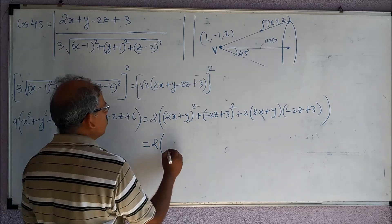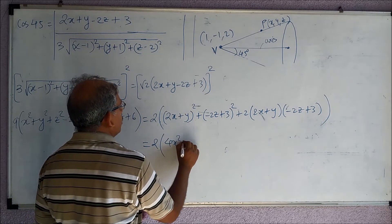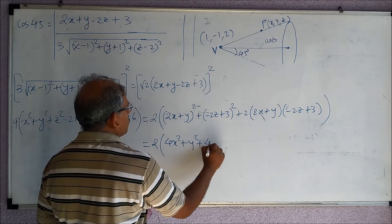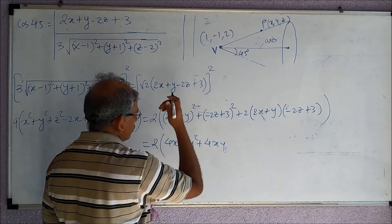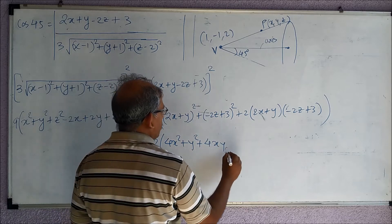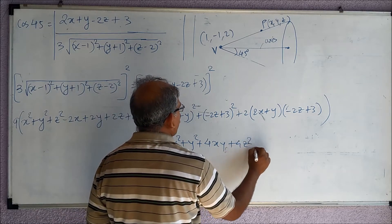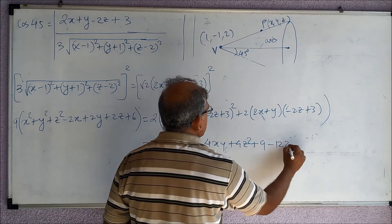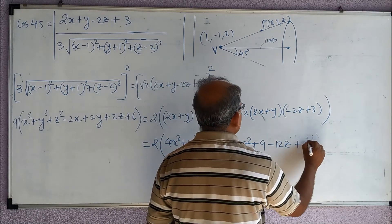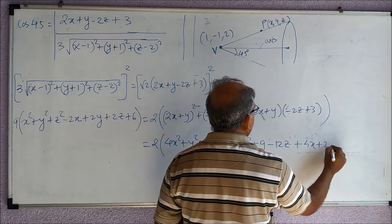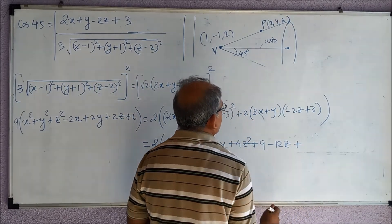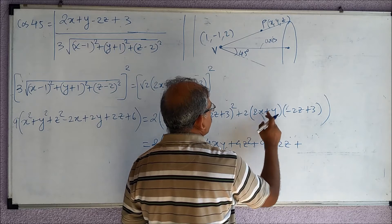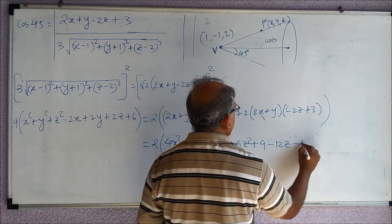Now this is 4x² + y² + 4xy, plus 4z² + 9 - 12z + 4x + 2y, plus...